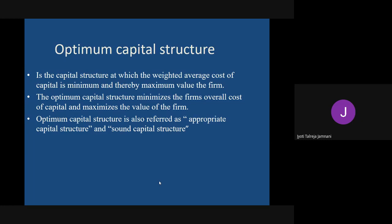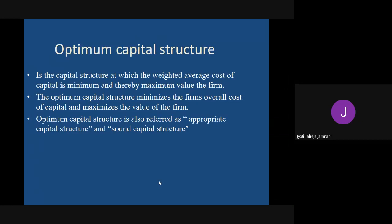The definition: optimum capital structure is the capital structure at which the weighted average cost of capital (WACC) is minimum, and thereby the value of the firm is maximum. Whenever the cost is minimum, it increases the value of the firm. You have to select a capital structure where the total cost - also called weighted average cost of capital - is minimized.